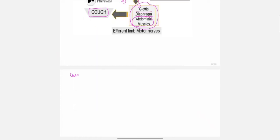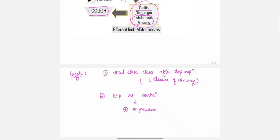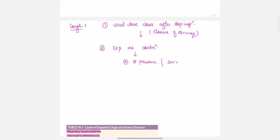What happens during cough? First, the vocal cords close after deep inspiration, leading to closure of the airway. Next, expiratory muscle contraction generates positive intrathoracic pressure. This pressure increases as much as 300 millimeters of mercury, and then sudden opening of the vocal cords leads to cough production.